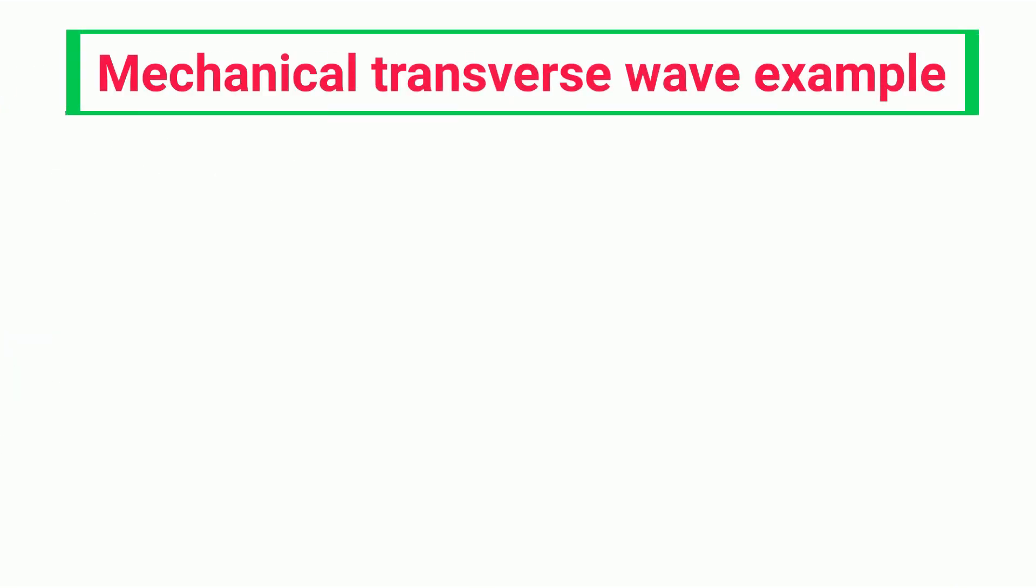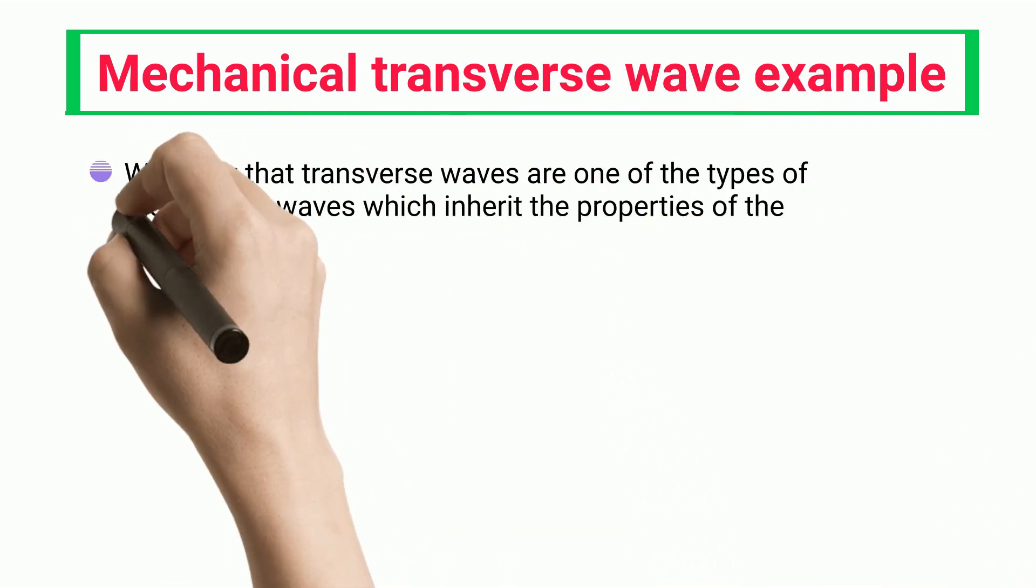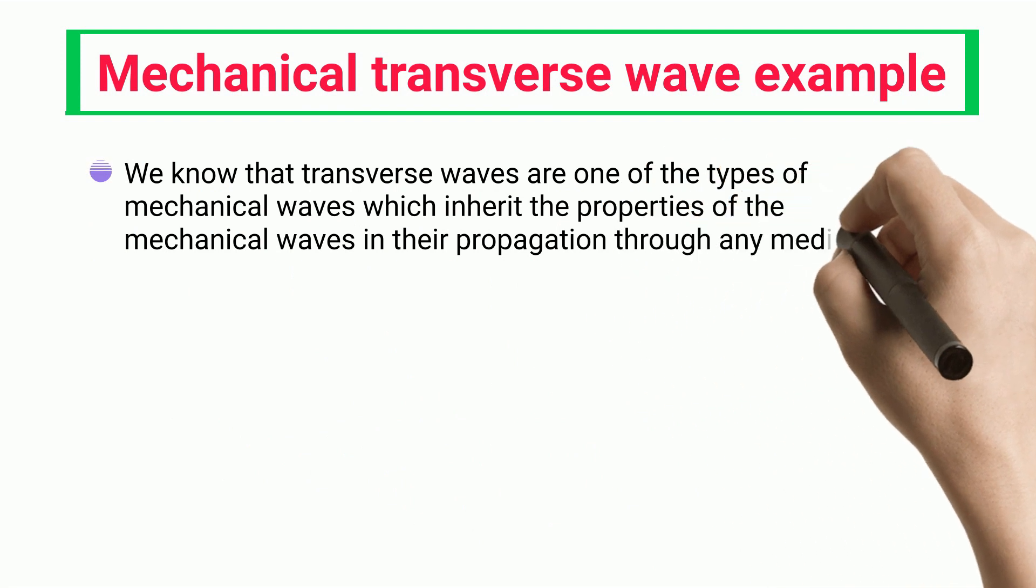Mechanical transverse wave examples. We know that transverse waves are one of the types of mechanical waves which inherit the properties of the mechanical waves in their propagation through any medium.